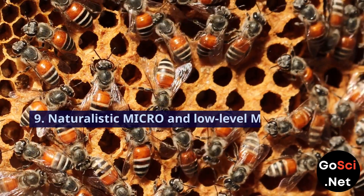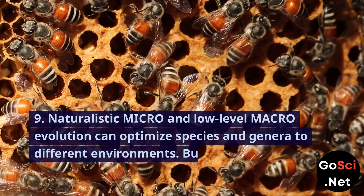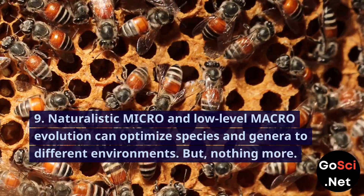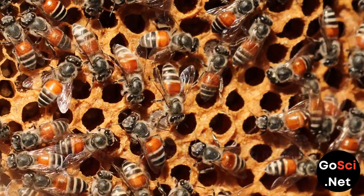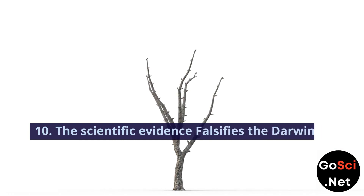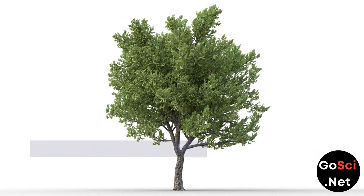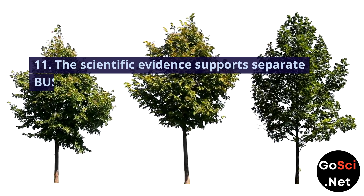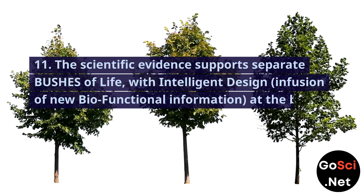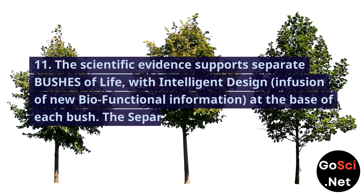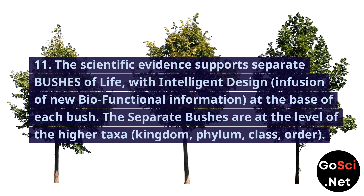9. Naturalistic micro- and low-level macro-evolution can optimize species and adapt them to different environments. But nothing more. 10. The scientific evidence falsifies the Darwinian view of a single tree of life. 11. The scientific evidence supports separate bushes of life with intelligent design, with infusion of new biofunctional information at the base of each bush.